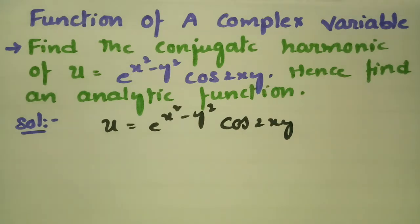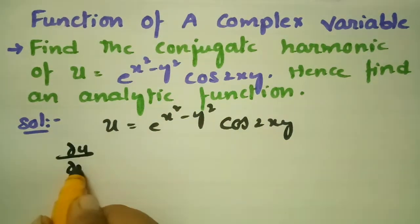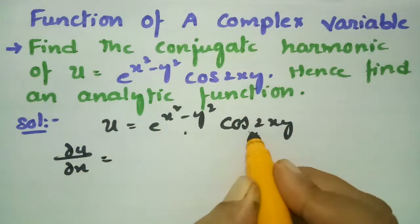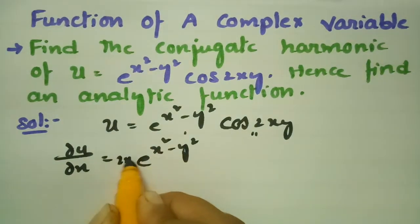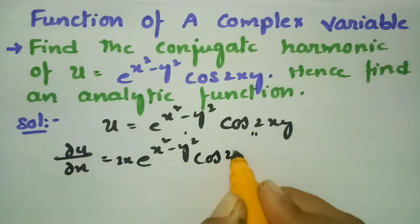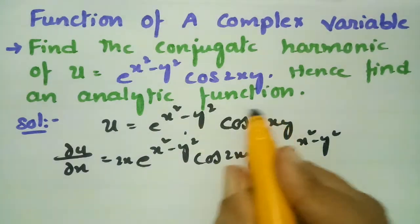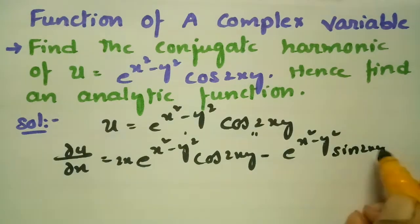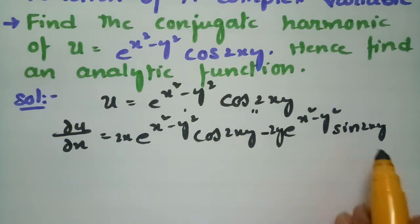We have to find the conjugate of u, which is nothing but v. First, I am taking the partial derivative with respect to x, that is ∂u/∂x. Using the product rule — the first function is e^(x²-y²) and the second is cos(2xy) — the derivative of the first function gives a factor of 2x, and the derivative of cos(2xy) gives minus sin(2xy) times 2y.